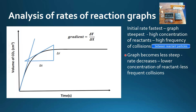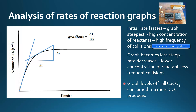Next, we can see that the graph becomes less steep, happening around here. The rate decreases because we have a lower concentration of reactant and less frequent collisions, which means a lower rate of reaction. Finally, the graph levels off — all the calcium carbonate has been consumed and no more carbon dioxide gas is being produced.